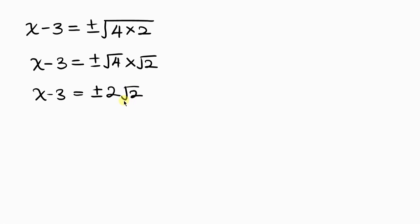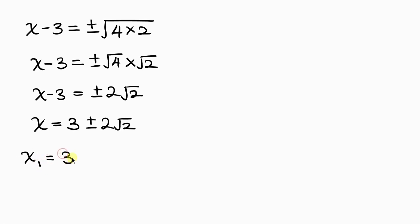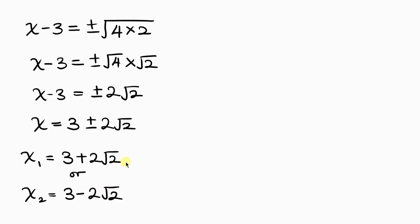Finally, we move negative 3 to the right hand side, so x equals 3 plus or minus 2 root 2. There are two values of x. The first value is x equals 3 plus 2 root 2, and the second value is x equals 3 minus 2 root 2. Amongst these two answers, one is our valid solution, so we need to check which is correct.